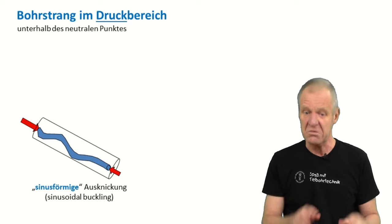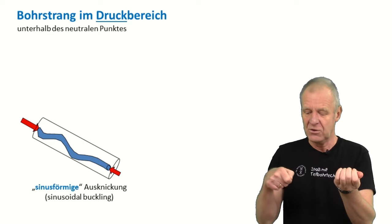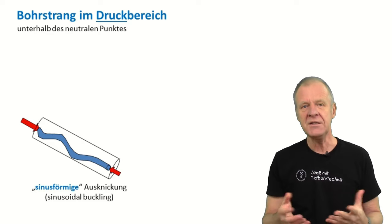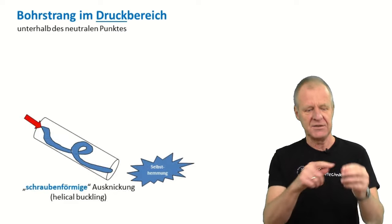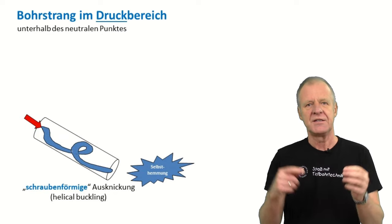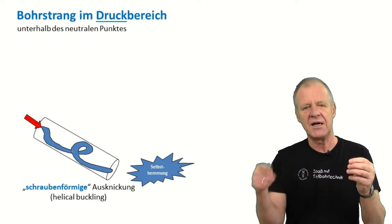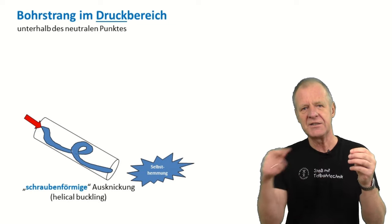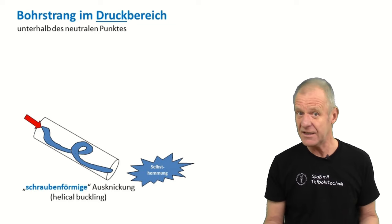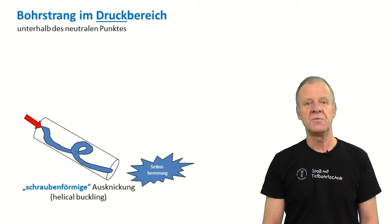And if we push even harder, then the drill string will form a helix in the borehole — it goes around the entire borehole wall, creating a lot of friction. Often this effect can get to the point of self-locking, such that you cannot push the drill string any further at all.